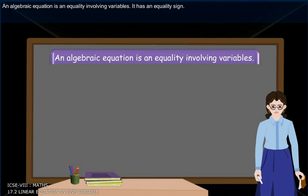An algebraic equation is an equality involving variables. It has an equality sign.